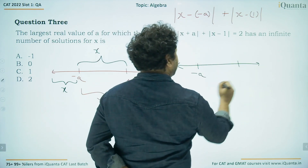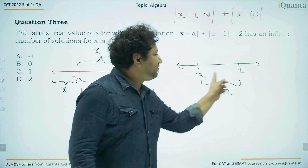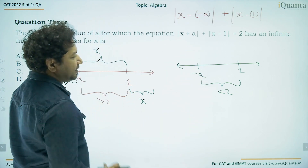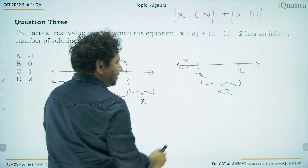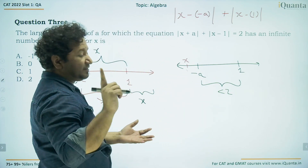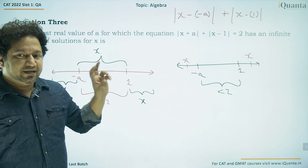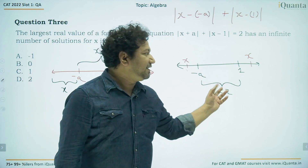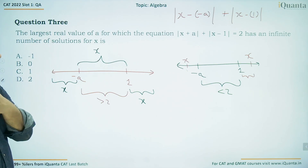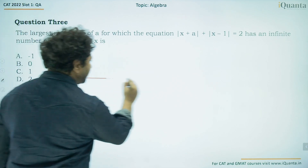In the second case, if the distance between −a and 1 is less than 2, putting x between them gives a sum less than 2. There may be one exact solution to the left of −a and one to the right of 1 where the distances add up to exactly 2. But here we have only two solutions, not infinite, which is not what the question asks for.